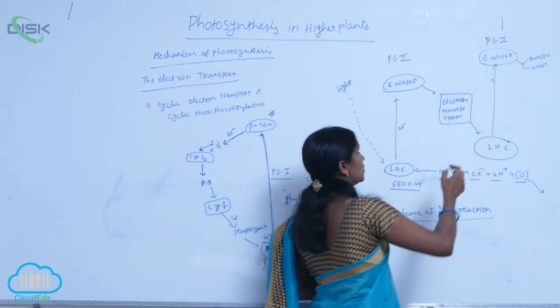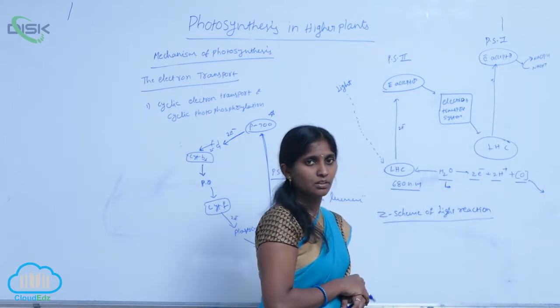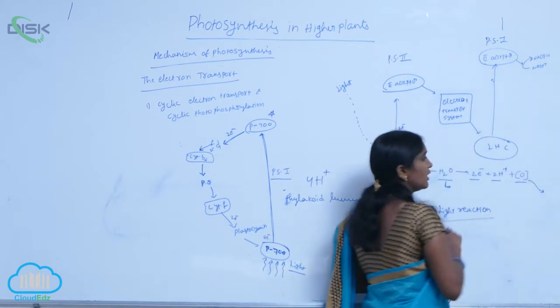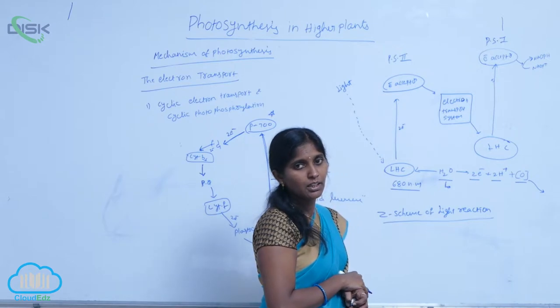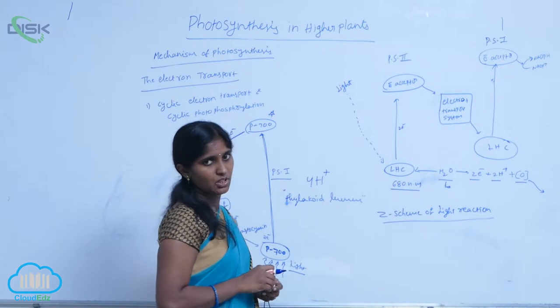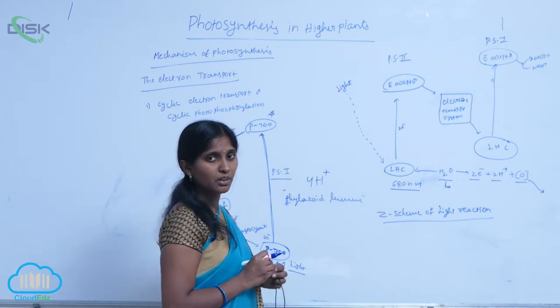From there, the electrons reach electron transporters upstream and again downstream. When they reach NADP, the NADP is reduced to produce NADPH in the presence of enzyme NADP oxidoreductase.